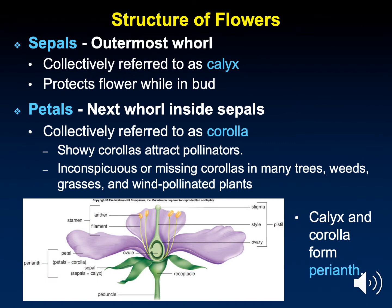Let's look at the basic structure of a flower. Just above the receptacle are the sepals. Together, the sepals are called the calyx. Notice in the illustration that the sepals are green — anything green in a plant can photosynthesize. On a flower before it blooms, all you see are the sepals; they protect the developing flower on the inside. When the flower blooms, the sepals bend back.